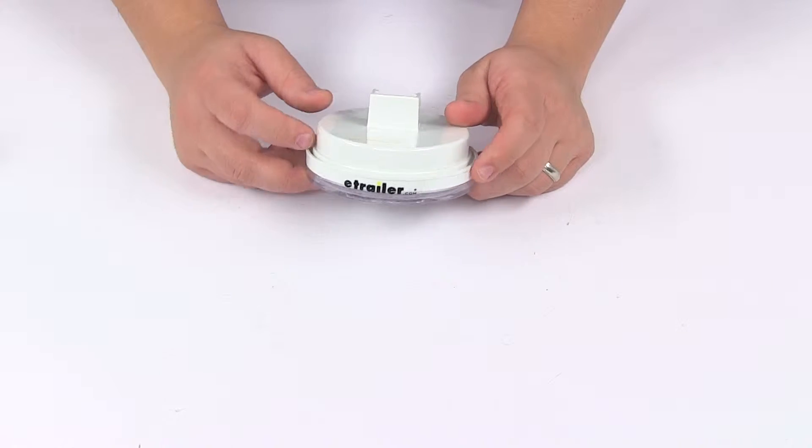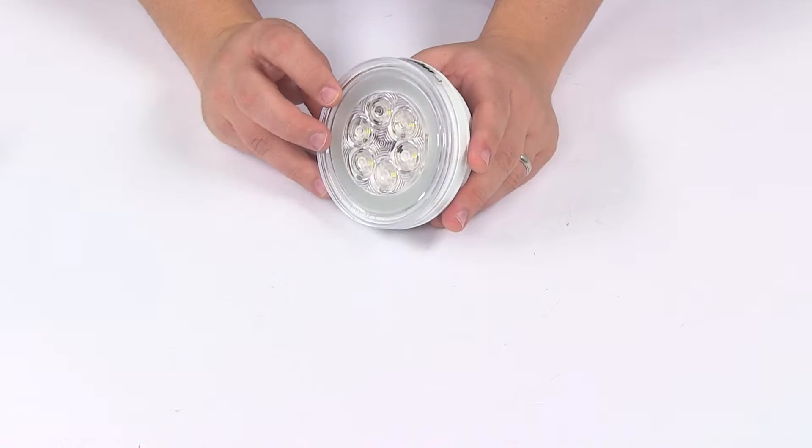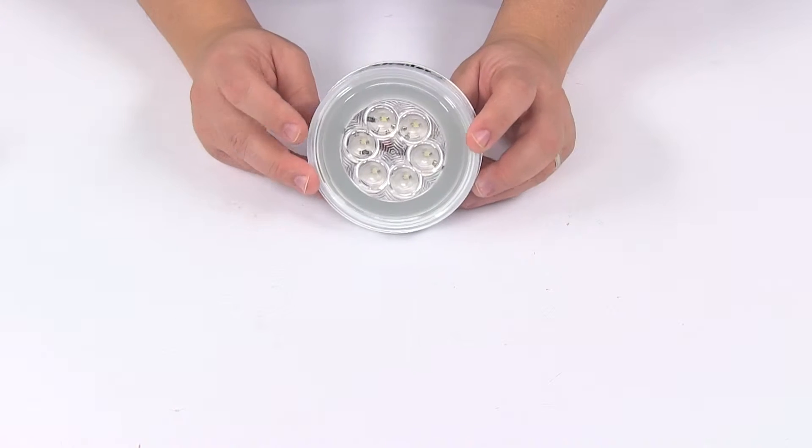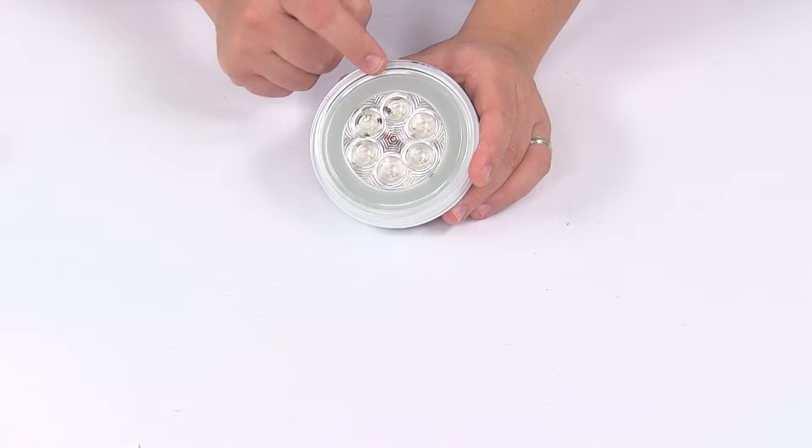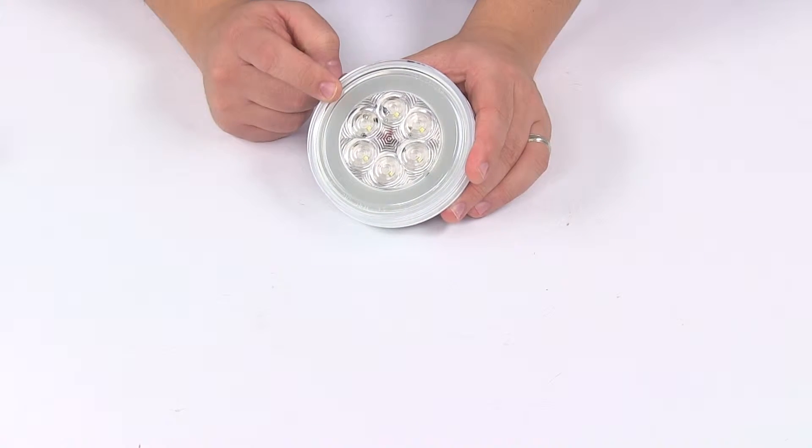The unit features a sonically sealed waterproof housing and lens unit, so this is submersible. The Glow Light series features a brighter outer ring of light with a smooth appearance.